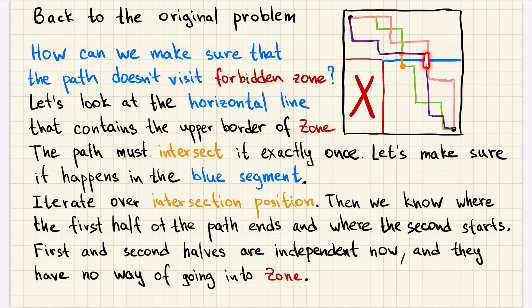Here we can see in orange two possible intersections. What if we fix the intersection, for example, fix this one intersection. Then before the intersection, we should move from the start to the beginning of the intersection. And after the intersection, we should move from the endpoint of the intersection to the end of the whole path. And those halves are independent. And what's important, if we fix this position, the first part of the path should be contained in this zone, so it cannot go in the forbidden zone. And the second part will be contained to this zone. So again, it cannot go into the forbidden zone.